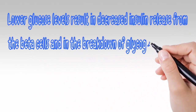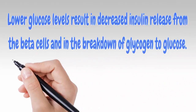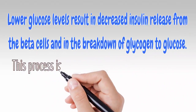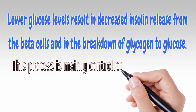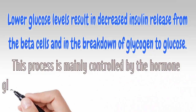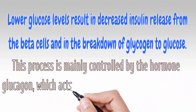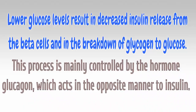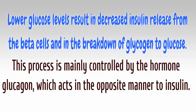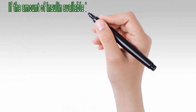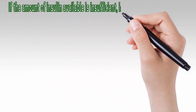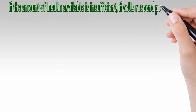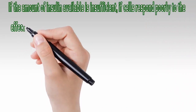Lower glucose levels result in decreased insulin release from the beta cells and in the breakdown of glycogen to glucose. This process is mainly controlled by the hormone glucagon, which acts in the opposite manner to insulin.